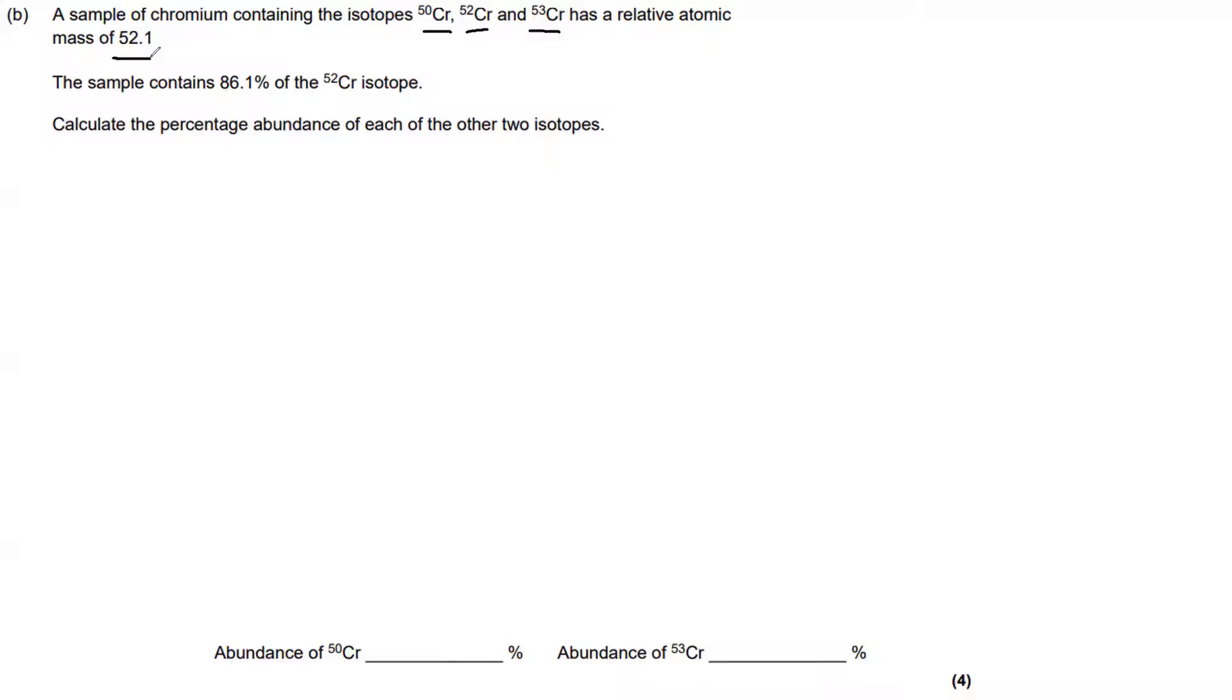So that's the average mass of all the isotopes, taking into account the relative abundances. However, they've only told us the relative abundance of the chromium-52. Here we find out the sample contains 86.1% of the chromium-52 isotopes. So we only have the abundance of one of them.